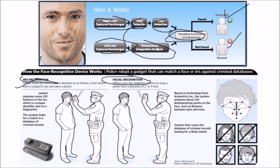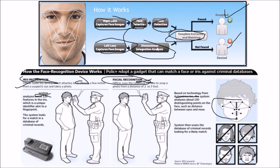An officer holds a device attached to an iPhone, placed a few inches from a suspect's eye, and takes a photo. The system analyzes about 235 features in the iris as a unique identifier similar to a fingerprint, looking for a match in a database of criminal records. In facial recognition, the officer uses a camera to snap a photo from a distance of two to five feet, and the system analyzes about 130 distinguishing points on the face to scan the database for a likely match.